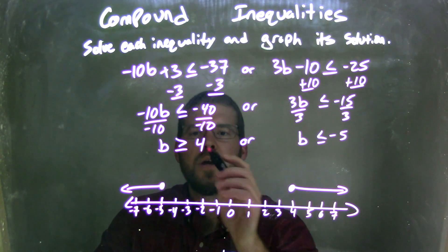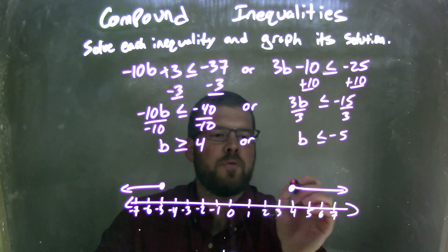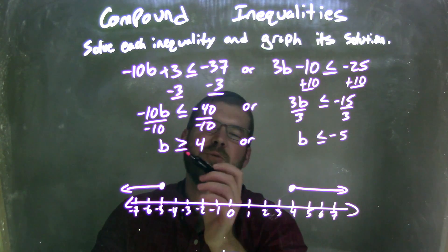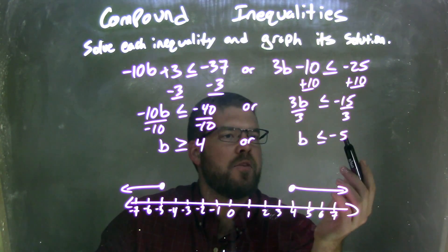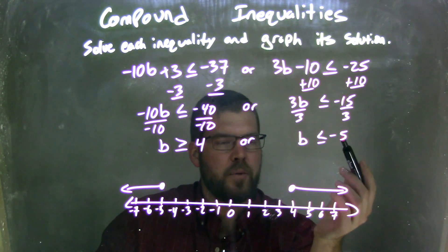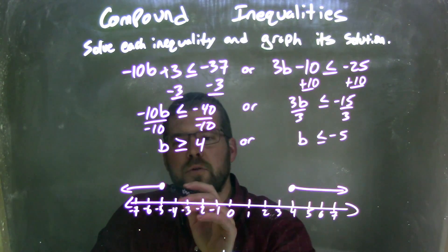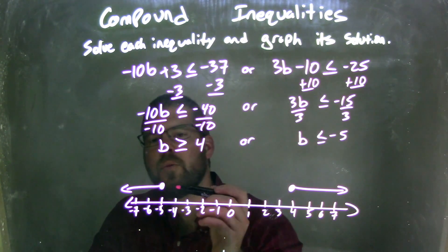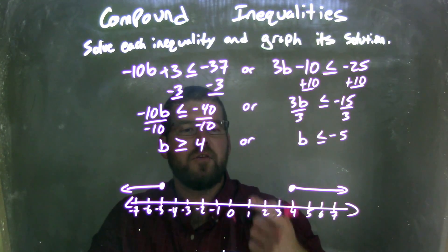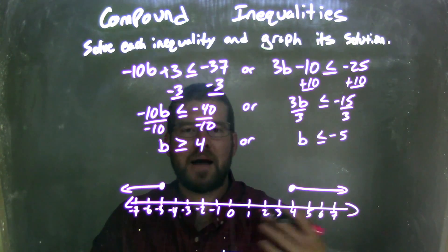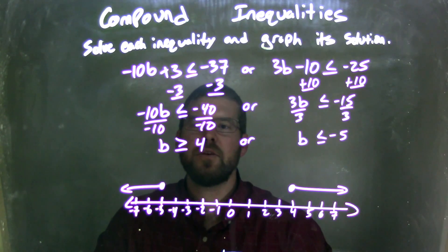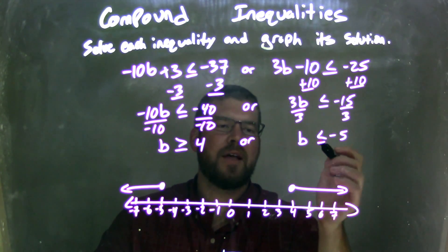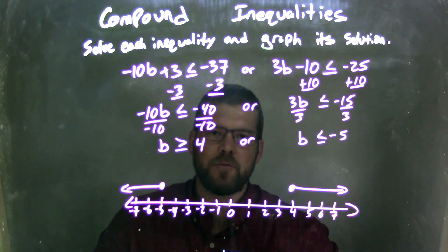I graphed each one individually. Since b could equal 4, I used a closed circle and put the arrow to the right because b is also greater than 4. For the other part, b could equal negative 5, so closed circle there, and since b is also less than negative 5, the arrow went to the left. My graph matches my final answer: b is greater than or equal to 4, or b is less than or equal to negative 5.